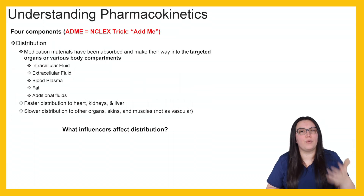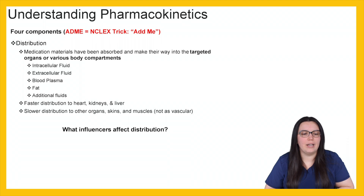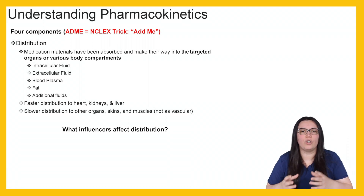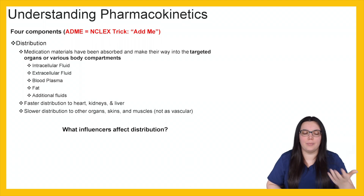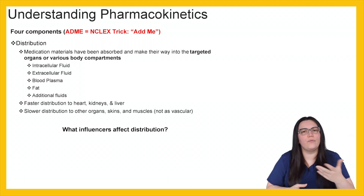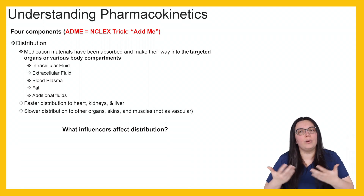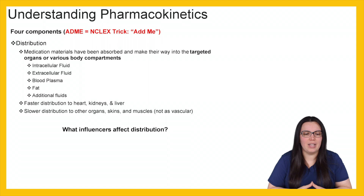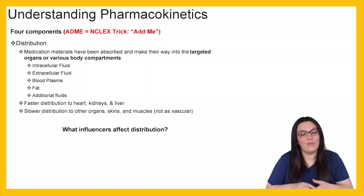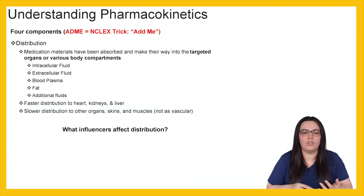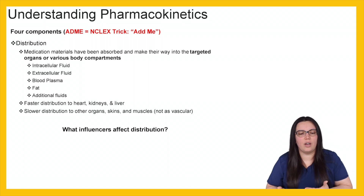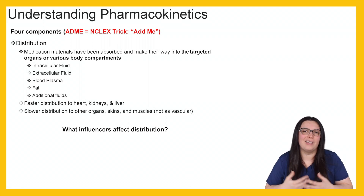Let's move on to the second component of ADME — D for distribution. Medication materials have been absorbed and make their way into our targeted organs or various body compartments. The targeted organs are where the medication's intended effects will take place — for example, if a medication works on the heart, the heart is the targeted destination. Body compartments include intracellular fluid, extracellular fluid, body plasma, fat, and additional fluids. There is faster distribution to the heart, kidneys, and liver, and slower distribution to organs like skin and muscles because they are less vascular.